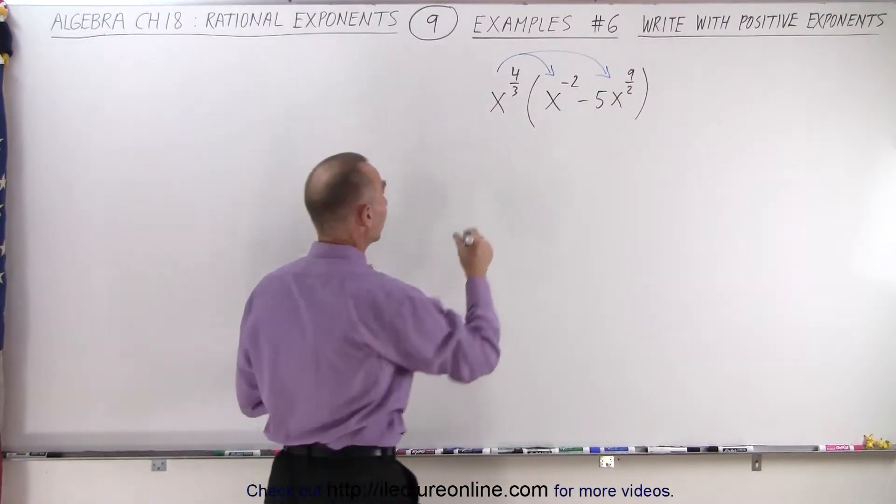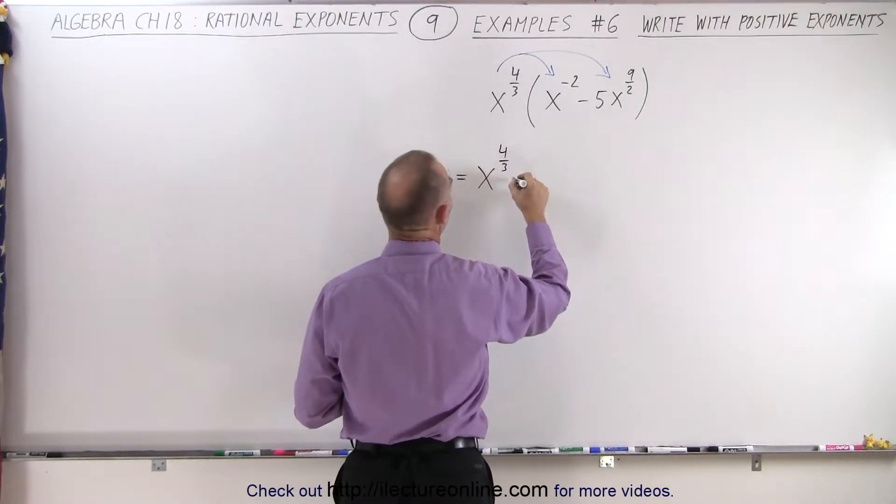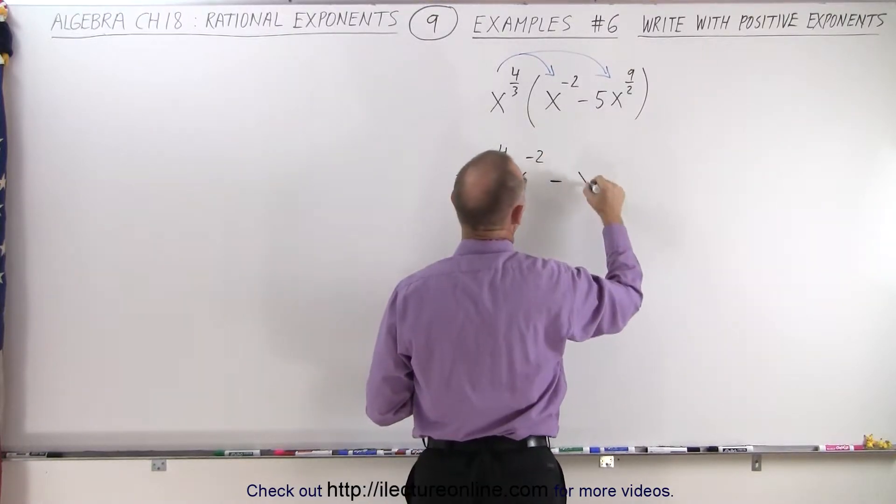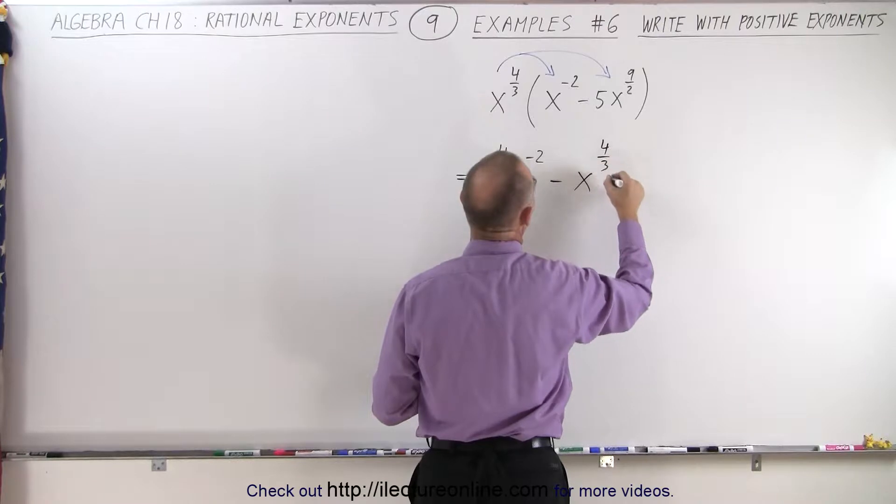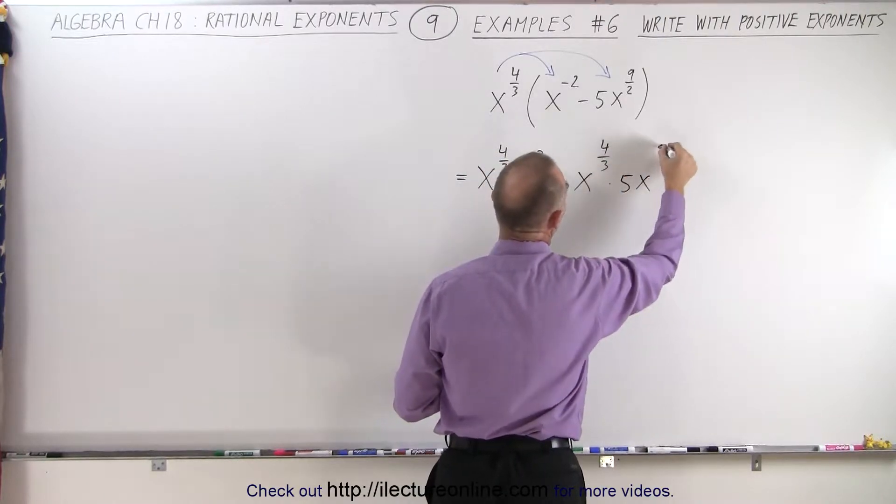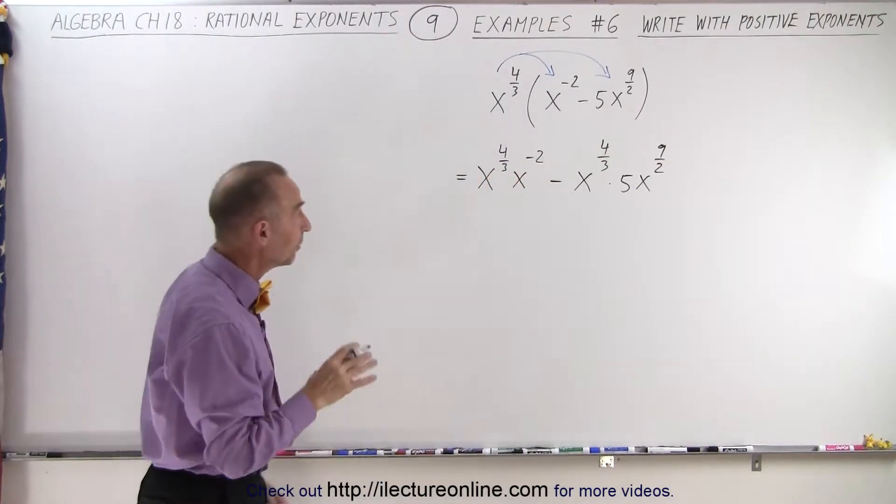What does that look like? This becomes equal to x^(4/3) times x^(-2) minus, because we have a minus here, x^(4/3) times 5x^(9/2). I simply wrote it like that. That makes it a little bit easier to deal with.